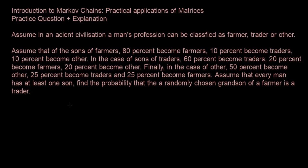I will start off with a question and show you how to do it without using matrices, and then how to do it with matrices. The question is: assume in an ancient civilization, a man's profession can be classified as farmer, trader, or other. There is no other way you can be classified — if you're a man, you belong to one of these three categories.